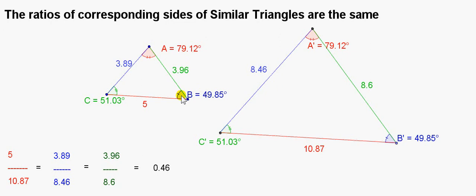Also, angle B in this triangle equals angle B prime over in this triangle here. And of course, C must equal C prime — the remaining angle of a triangle must be the same, because the angles of a triangle sum to 180.